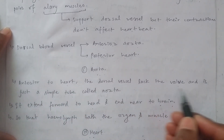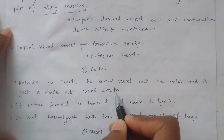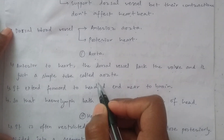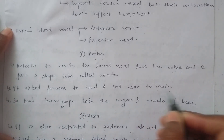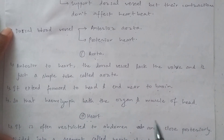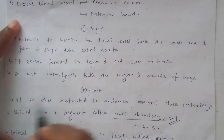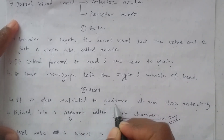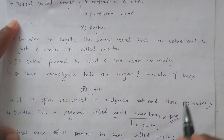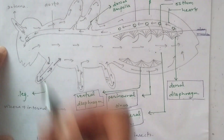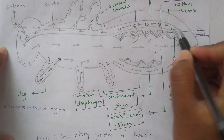Anterior to the heart, the blood vessel lacks valves and is just a simple tube called the aorta. It extends forward to the head, near the brain. The heart itself is often restricted to the abdomen and is closed posteriorly, but open anteriorly.